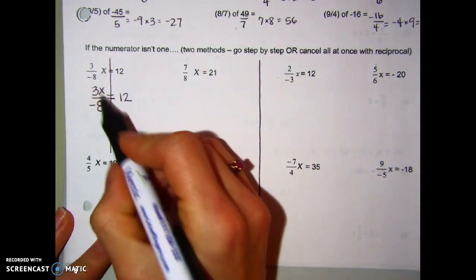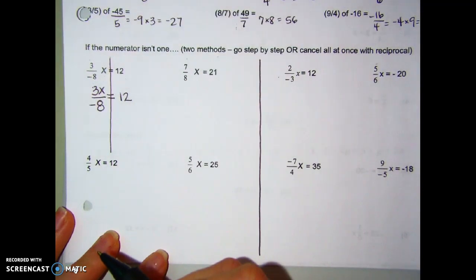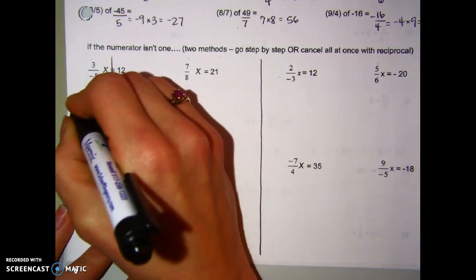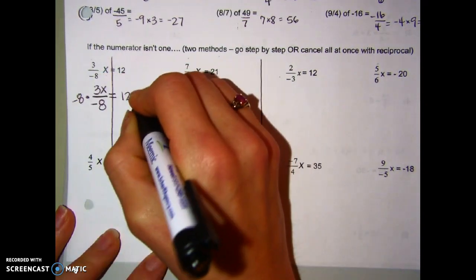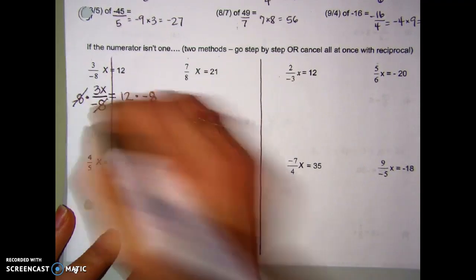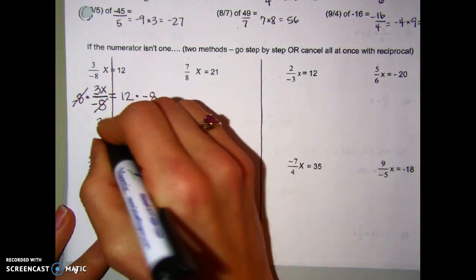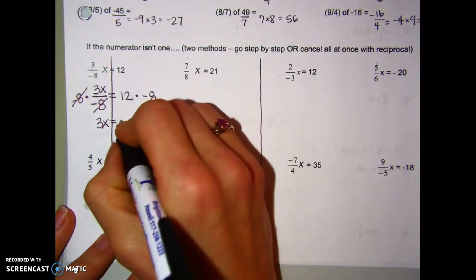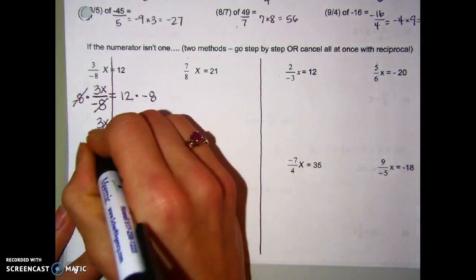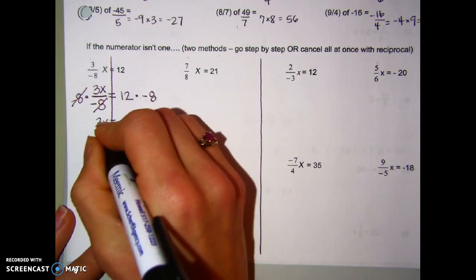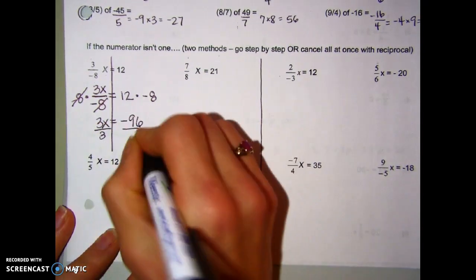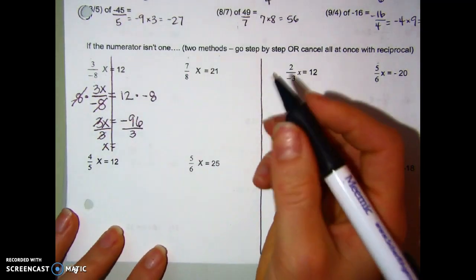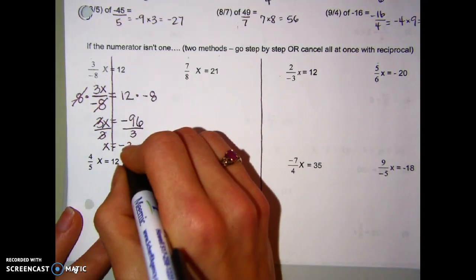I can always rewrite the fraction with x put in — I have two things to cancel out. I'm dividing by negative 8, so multiply both sides by negative 8 to cancel that out. Bring down your 3x, and 12 times negative 8 is negative 96. Then one more step: since I'm multiplying by 3, I divide by 3 — cancel the 3s — and x equals negative 96 divided by 3, which is negative 32.